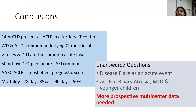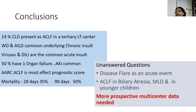In conclusion: 14% of chronic liver disease present as ACLF in a tertiary liver transplant center. Wilson's disease and autoimmune are the common underlying chronic insult, whereas viruses are the common acute insult. 50% will have at least one organ failure and AKI is the commonest. ARC-ACLF is the most effective prognostic score. Mortality by 28 days is 35% and by 90 days is roughly 50 to 60%. Unanswered questions include: the disease flare as an acute event still lacks a standardized definition, and ACLF in biliary atresia, metabolic liver disease, and younger children requires more prospective multicenter data to understand why it is not being identified or picked up in time. Thank you.